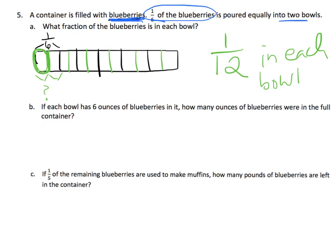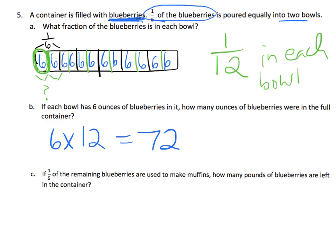The next question says: if each bowl has six ounces of blueberries in it, how many ounces of blueberries were in the full container? Each of these bowls has six ounces, and we know that there are twelve-twelfths. Each twelfth equals six ounces, so twelve times six is seventy-two ounces in the full bag.